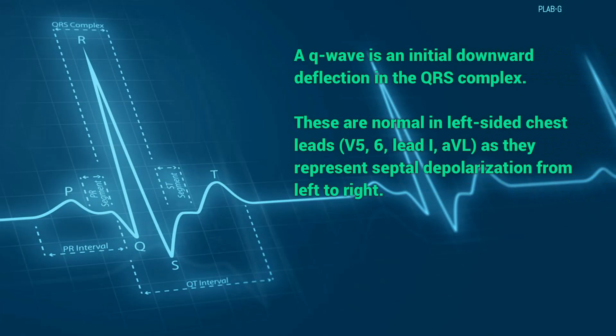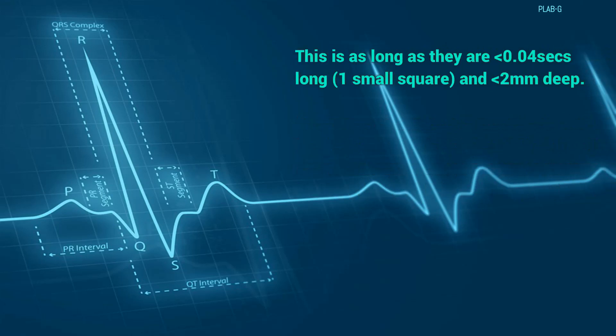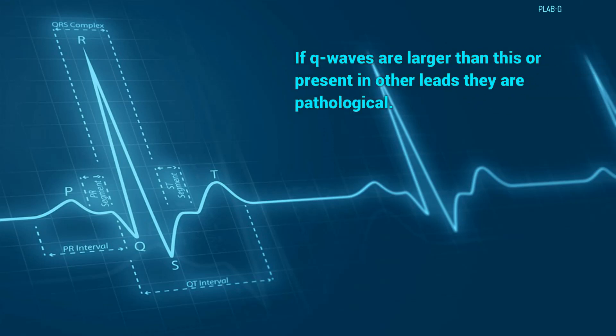A Q wave is an initial downward deflection in the QRS complex. These are normal in left-sided chest leads, as they represent septal depolarization from left to right, as long as they are less than 0.04 seconds long — which is one small square — and less than 2 mm deep. If Q waves are larger than these or present in other leads, they are pathological.